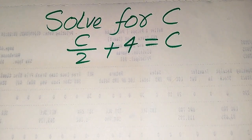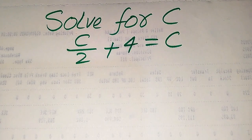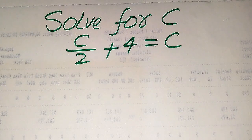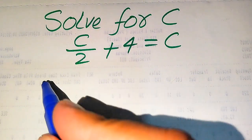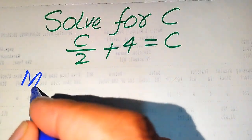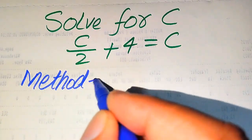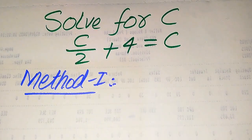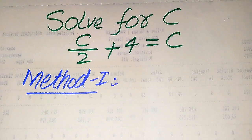Hello everyone. How to solve this problem for the values of C: C divided by 2 plus 4 is equals to C. We solve this problem for all the values of C. First we find all the roots of this equation, and at the last we will verify which of the roots are solutions and which of the roots are extraneous roots. We solve this problem using two methods.